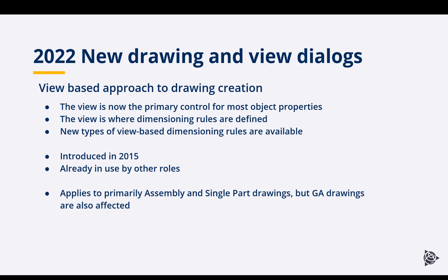It is already in use by other roles in the US. If you were to open a precast role or a concrete and rebar role, you'll probably find that these are already there. This change is really affecting your fabrication drawings — your assembly drawings and your single part drawings. GA drawings are not so much affected, except when you're cutting sections you'll see the new view properties. As a general rule of thumb, GA drawings are pretty much the same as they've always been. It's really the shop drawings where you're going to see this difference.